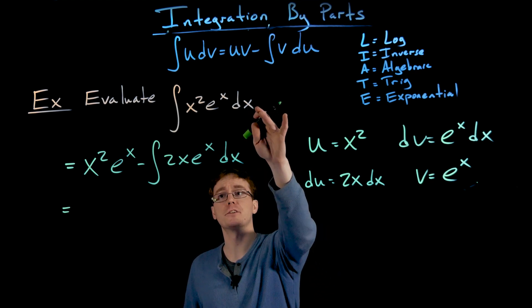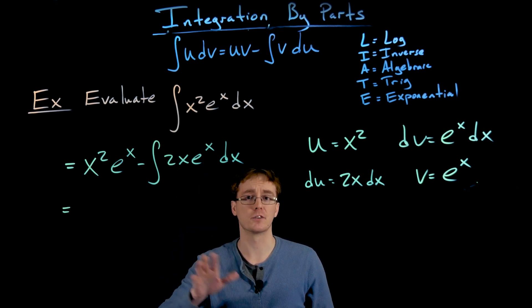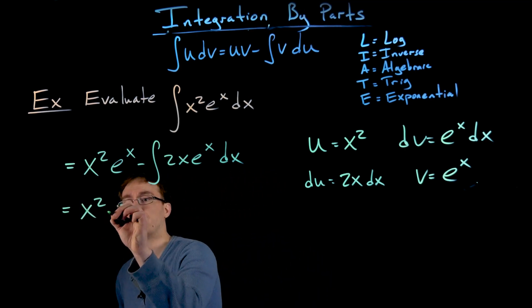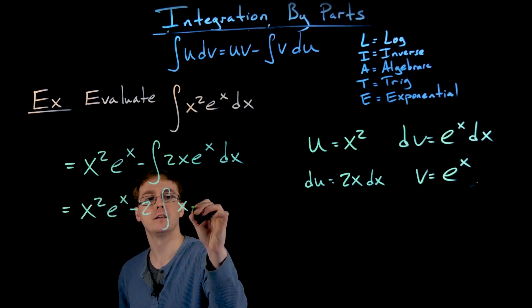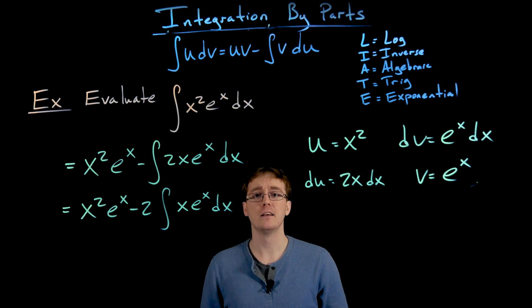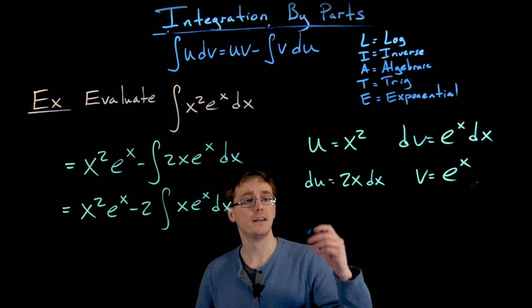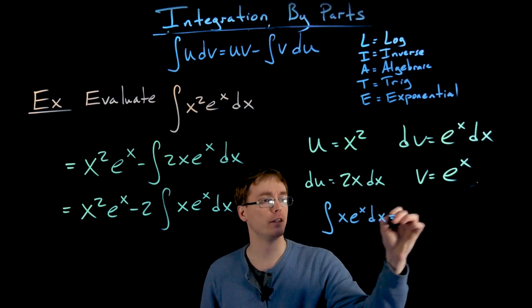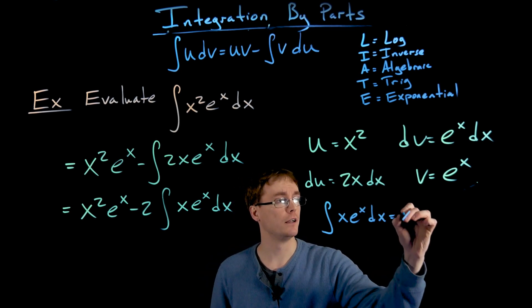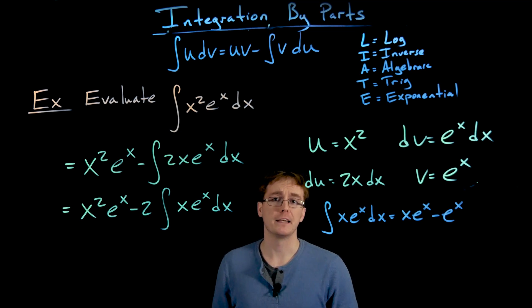We notice the second integral is exactly the one from our earlier example. Rather than going through integration by parts a second time, we can recycle that result: the antiderivative of x times e to the x equals x times e to the x minus e to the x. So we substitute that result directly.